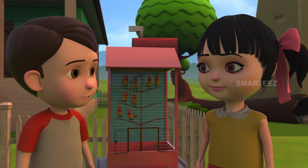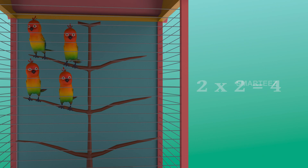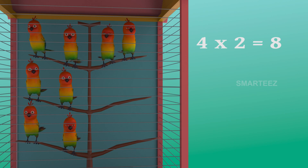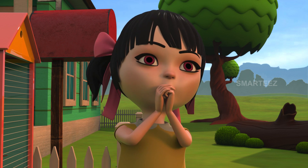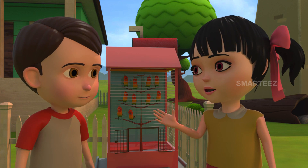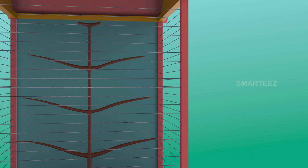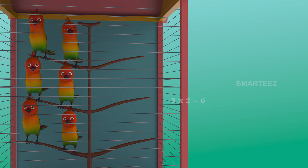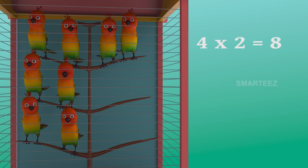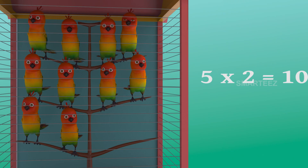Now the fourth set of two parakeets made it eight. Now the fifth set of two parakeets made it ten. So five sets of two parakeets make it ten parakeets.